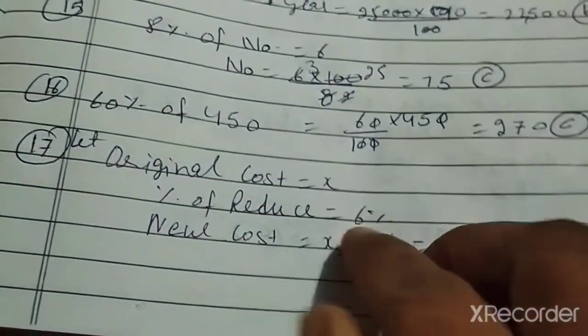Question number 15: 8% of which number is 6? That number is 6 multiplied by 100 upon 8. Same, question number 16: 60% of 450, very easy question. Question number 17: one chair's cost, if its rate is 6% reduced and the new price is 650, then 94x equal to 650, so x is 700.